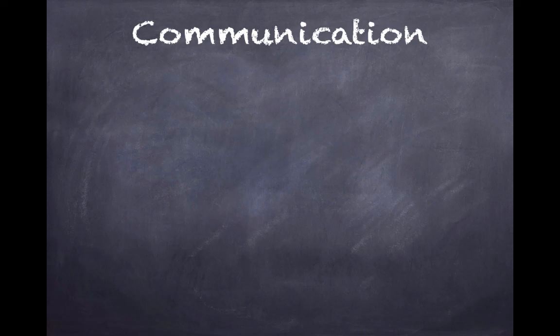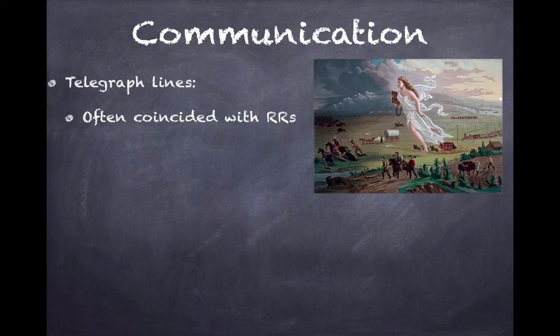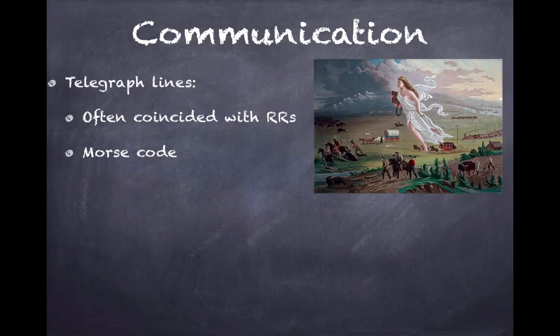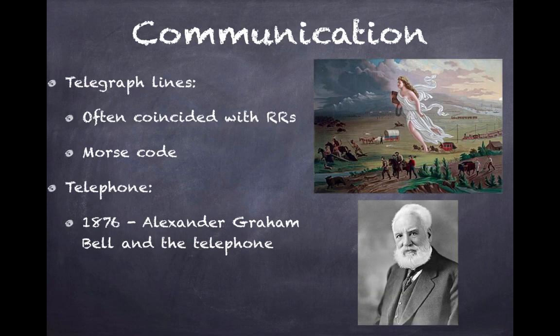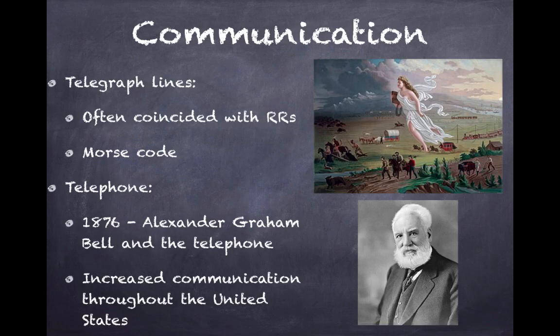Moving on to communication advances: telegraph lines grew during the Civil War to help mass communication using Morse code. This helped the expansion west as railroads moved west — in conjunction with railroad lines, telegraph lines were constructed. Also, by 1876, Alexander Graham Bell helped develop the telephone, and we eventually see its mass production. This increased communication throughout the United States, specifically as Americans were moving west.